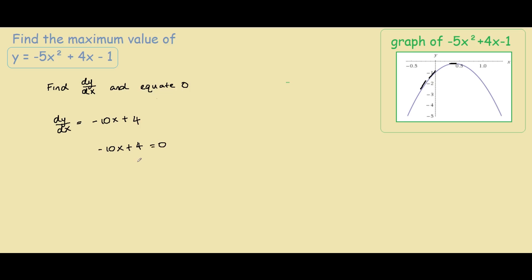So if you rearrange this, you get negative 10x equals to negative 4. Therefore, x equals to 4 over 10, which is the same as 2 fifths.